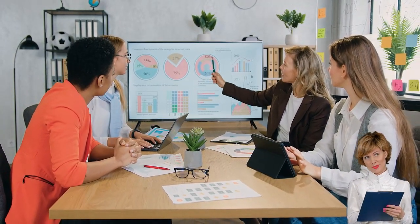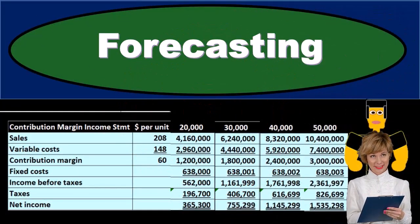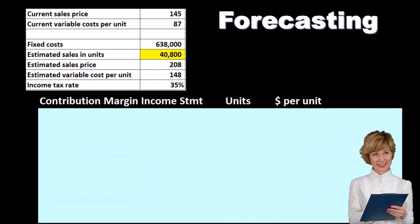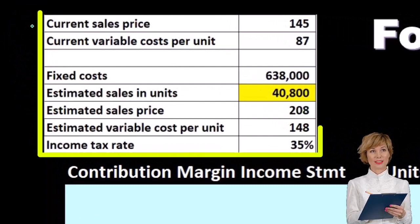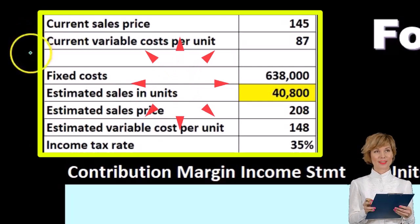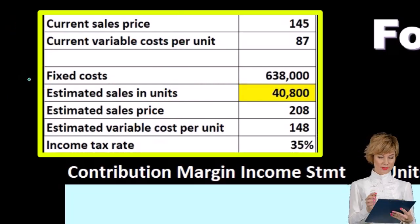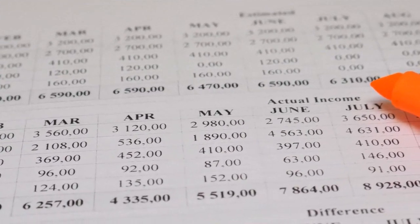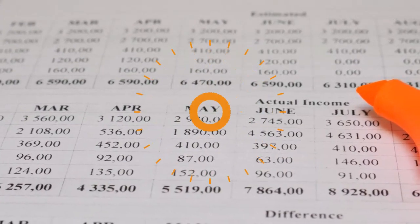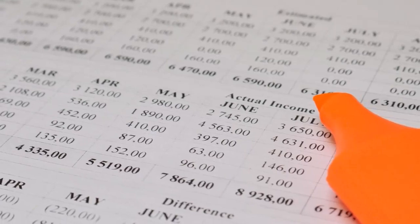Once we have this information in the format of a CVP type of analysis — in the format of a contribution margin type of income statement — here's going to be our information. Note that if you're talking about problems, they're often going to have the current information and then the future information. When we're thinking about how to break this down, we have the financial statements which are always built on something in the past, and then we take that information and project into the future. That's usually where we think about the CVP analysis.